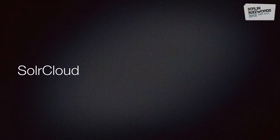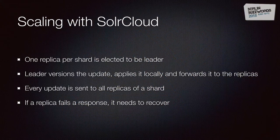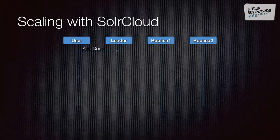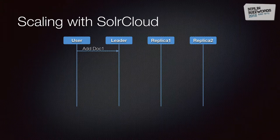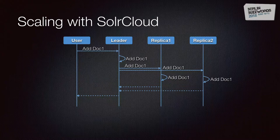With Solr 4, SolrCloud came. SolrCloud is essentially a set of features or capabilities added to Solr for high availability, node discovery, automatic load balancing, and more. One of the main features added was distributed indexing, so you no longer needed segment replication to send documents to different replicas. When a user adds a document, it goes to the leader, who adds it locally and sends it to all the replicas. Each replica adds the document locally and responds to the leader, which then responds to the user.